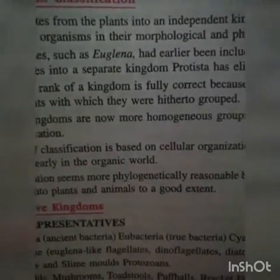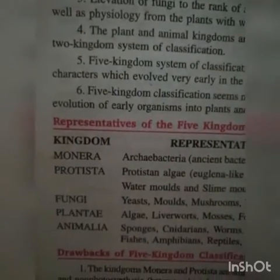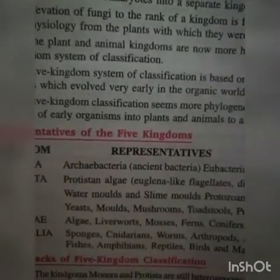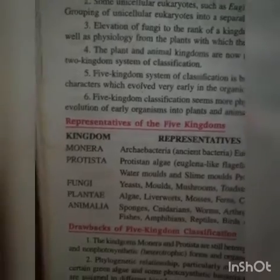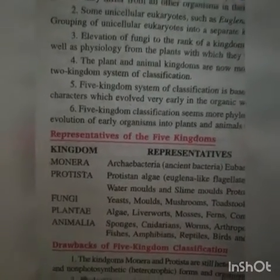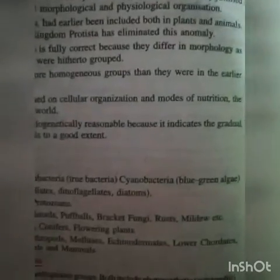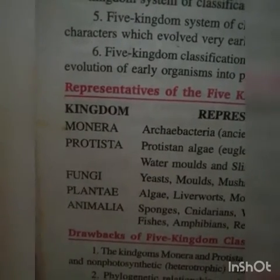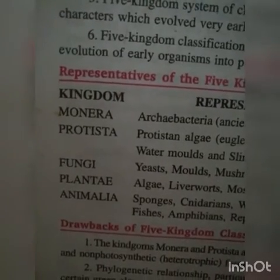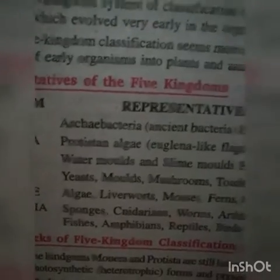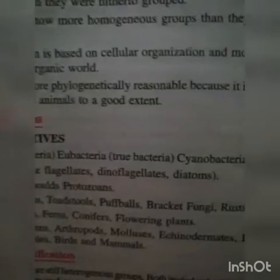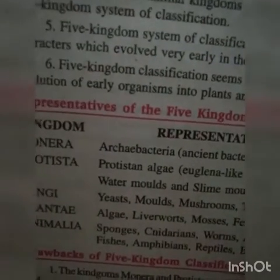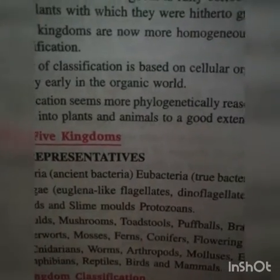Representatives of the five kingdoms: Monera is represented by Archaebacteria, Eubacteria (true bacteria), and Cyanobacteria (blue-green algae). Protista includes unicellular organisms such as algae, Euglena-like flagellates, dinoflagellates, diatoms, water molds, slime molds, and protozoans.